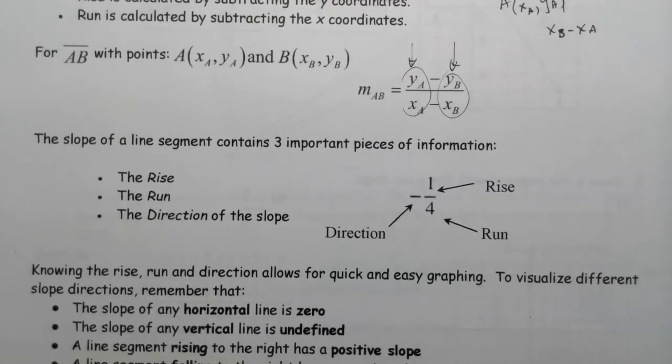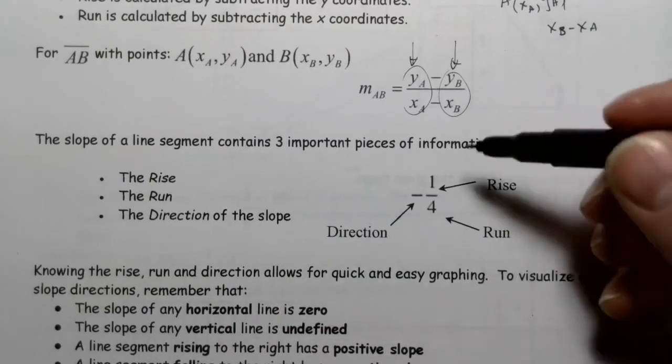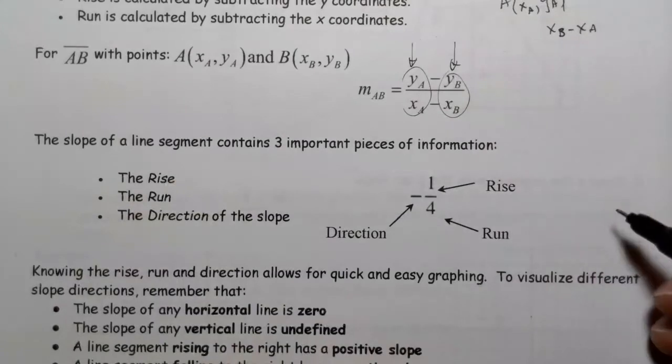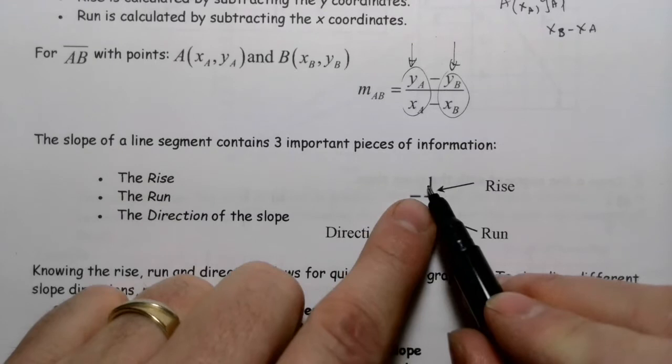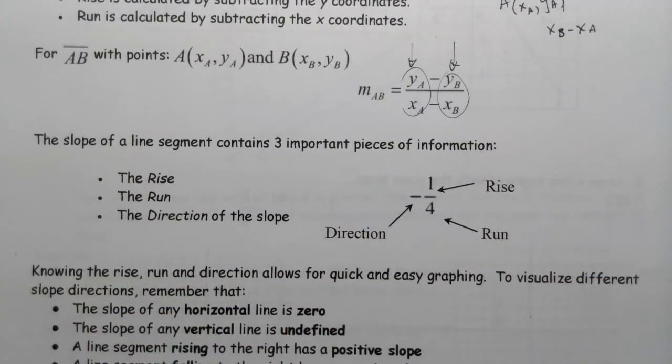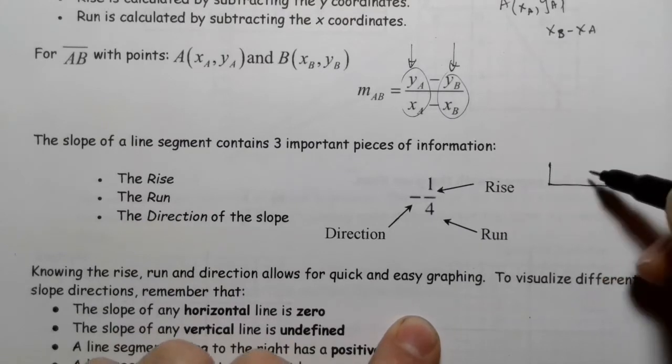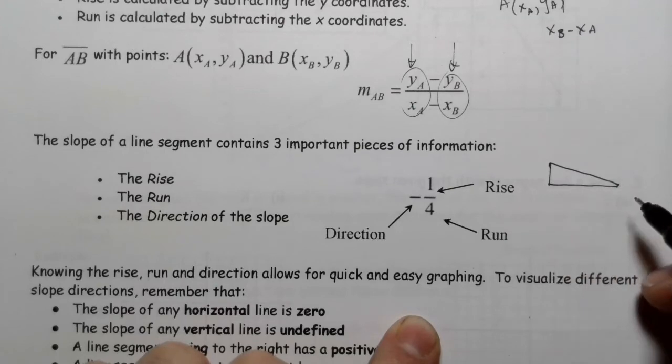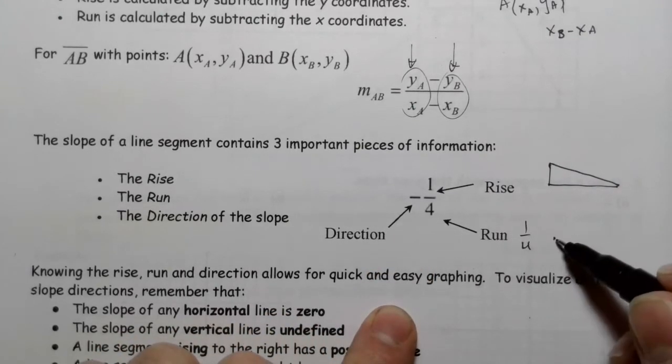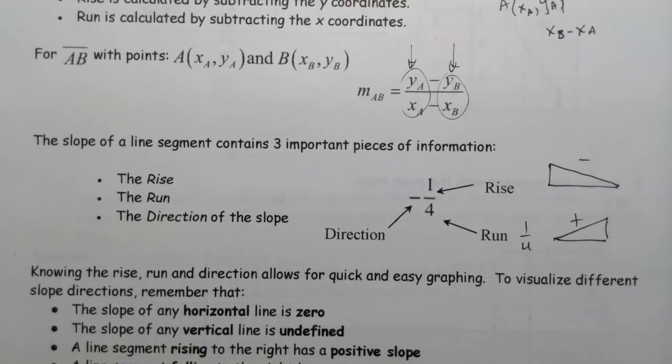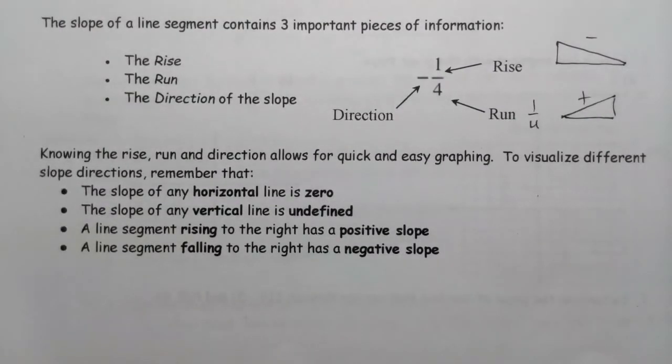The slope of a line segment contains three important bits of information: the rise, the run, and the direction. And that's given by the sign on it. A negative in front there means specifically that the graph is dropping as you go to the right.